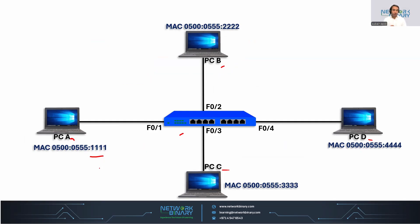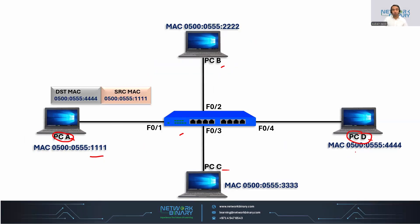Now, I want PCA to forward some data to PCD. So at layer 2, it will be using a frame and it will be making a layer 2 header by adding its own MAC address inside the frame, which is 1111 here, and the destination MAC address, which is PCD's MAC address. The frame has been generated and it will forward to the switch device, which receives the frame.